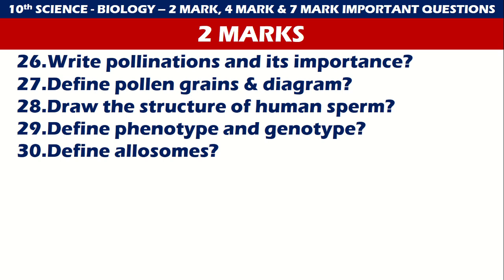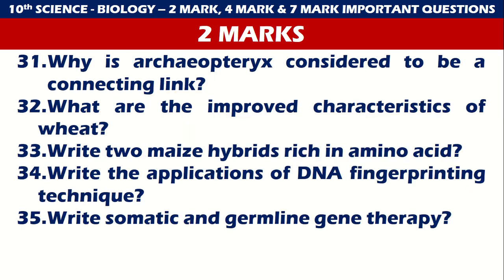Question 26: Write pollination and its importance. Question 27: Define pollen grains with diagram. Question 28: Draw the structure of human sperm. Question 29: Define phenotype and genotype. Question 30: Define allosomes. Phenotype and genotype is regularly asked, pollen grains is also important, and the structure of human sperm is also very important. That gives us 30 questions covered.